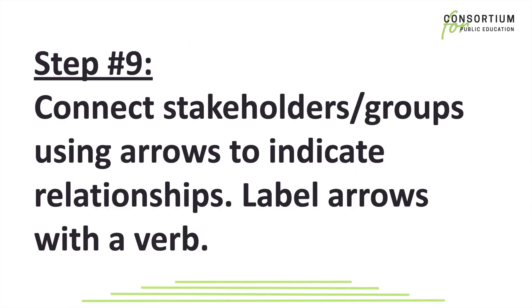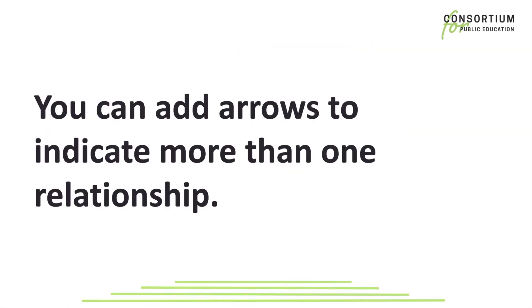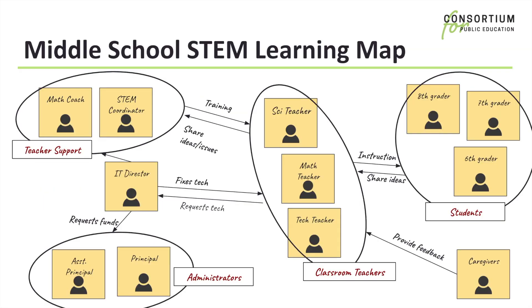Step 9: Connect stakeholders or groups using arrows to indicate relationships. Label arrows with a verb. You can also add arrows to indicate more than one relationship.